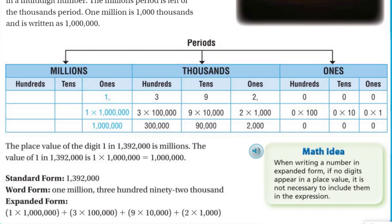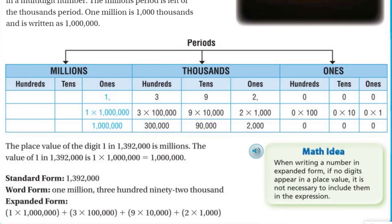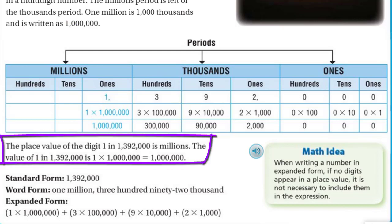If we go from left to right, it's just ones, tens, hundreds, thousands. Then that's when we get into ten thousand, hundred thousand, million, ten million, hundred million. The place value of the digit 1 in one million three hundred ninety-two thousand is millions. The value of 1 is one times one million, which equals one million.